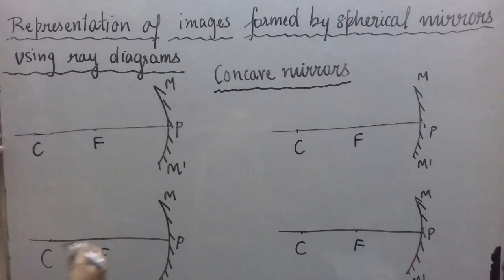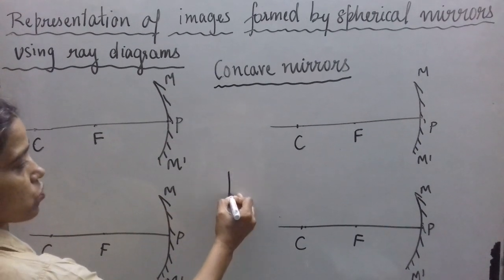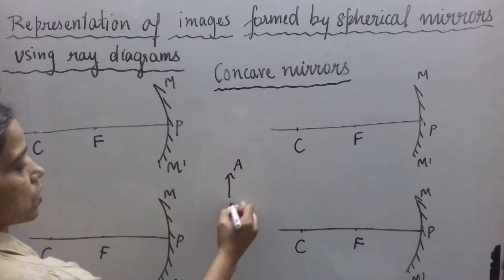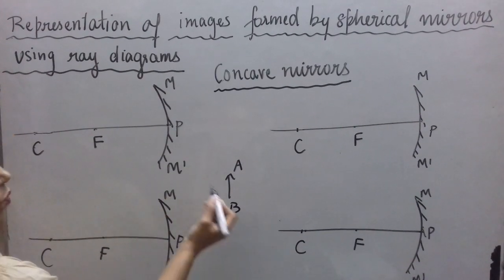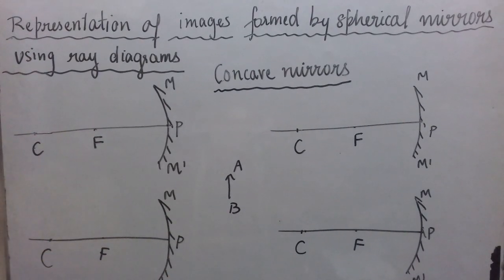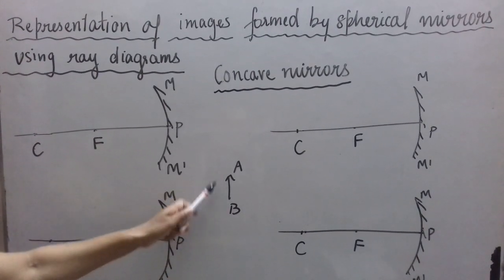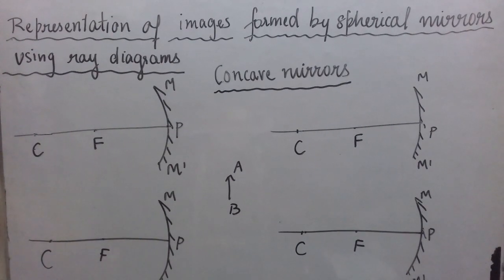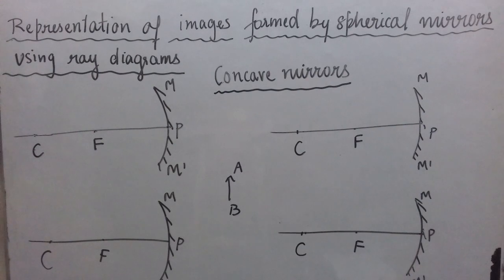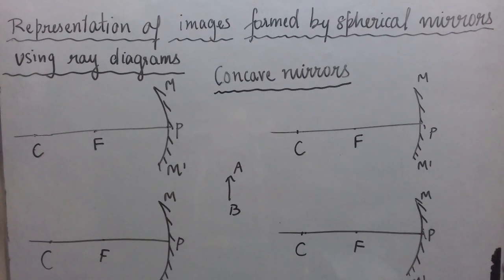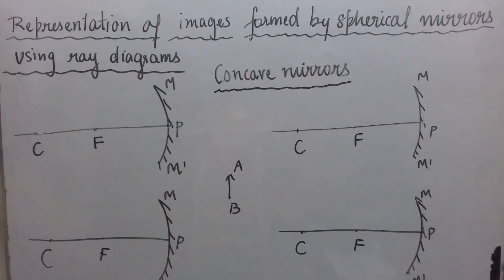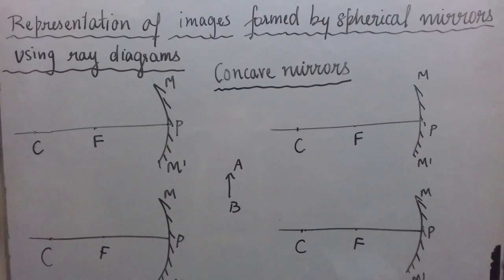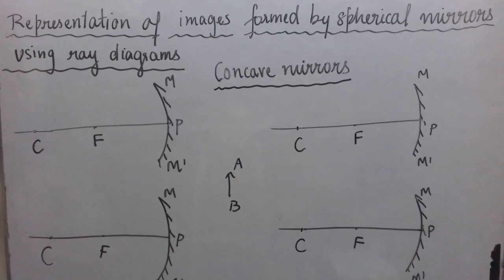Now, to draw the ray diagram for image formation, we always assume the object to be of this type and we take at least two rays from point A, finding the point where the two rays after reflection meet or appear to meet. Every time it is very tiring and time-consuming to measure angles I and R equal to draw the reflected rays. So let us form certain rules for some specific incident rays.